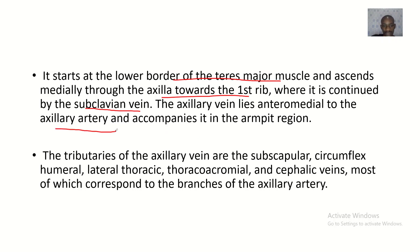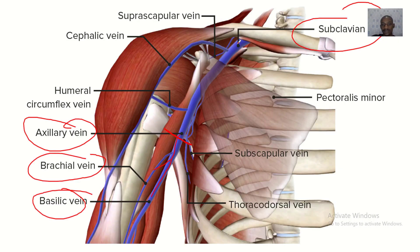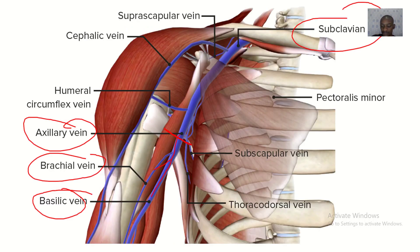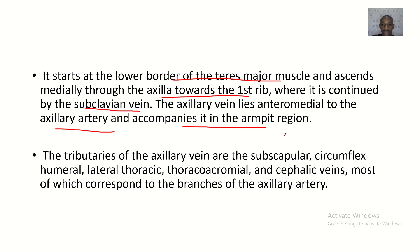The axillary vein lies anterior and medial to the axillary artery and accompanies it into the armpit region. As you can see in this image, the vein is shown in blue and the artery in red — that red vessel is the axillary artery.